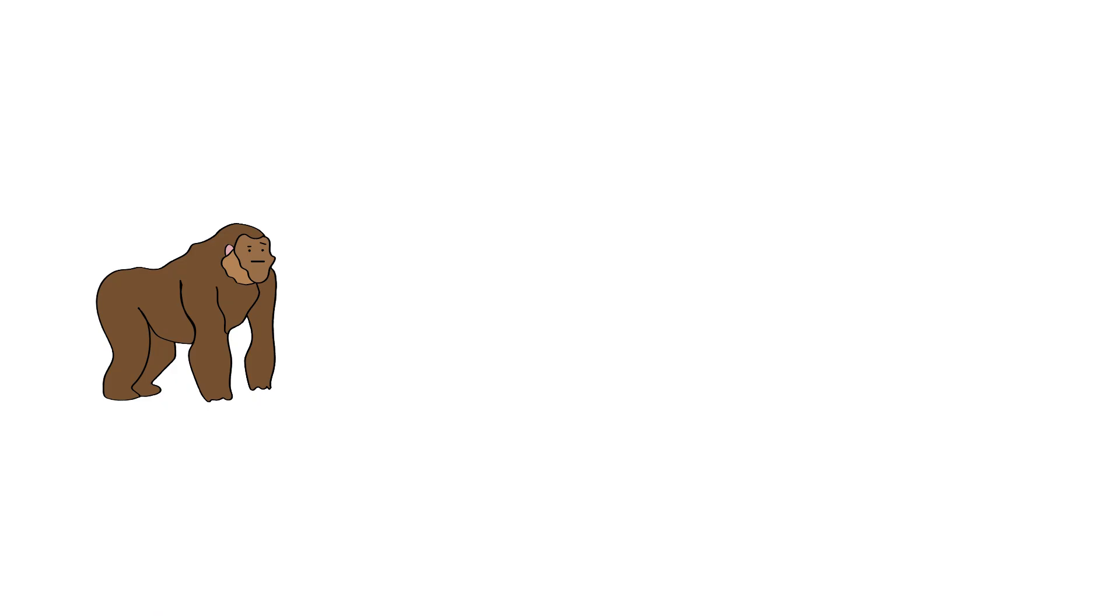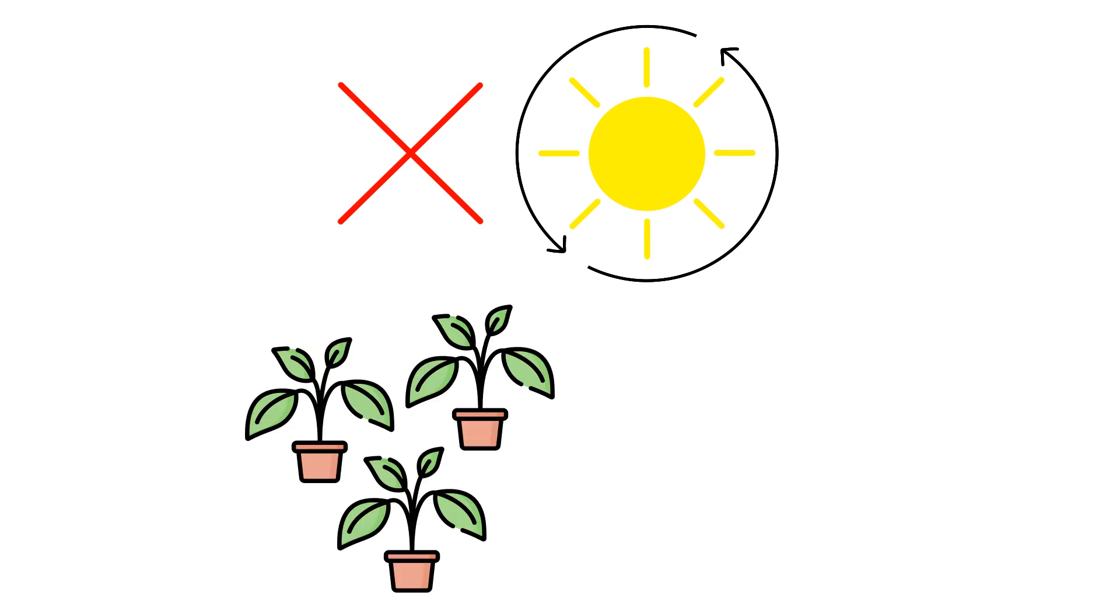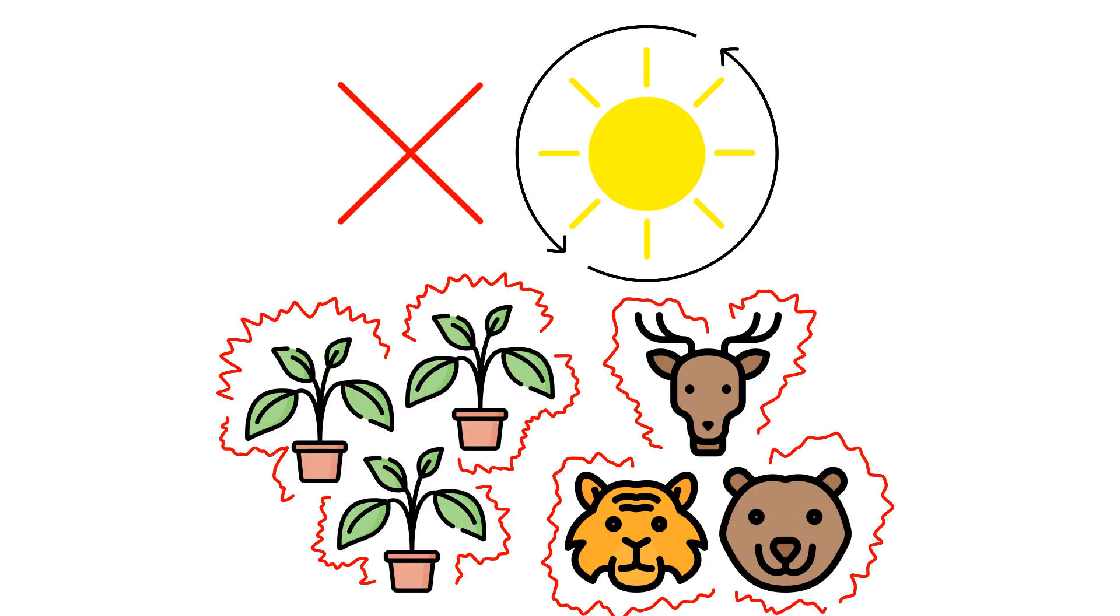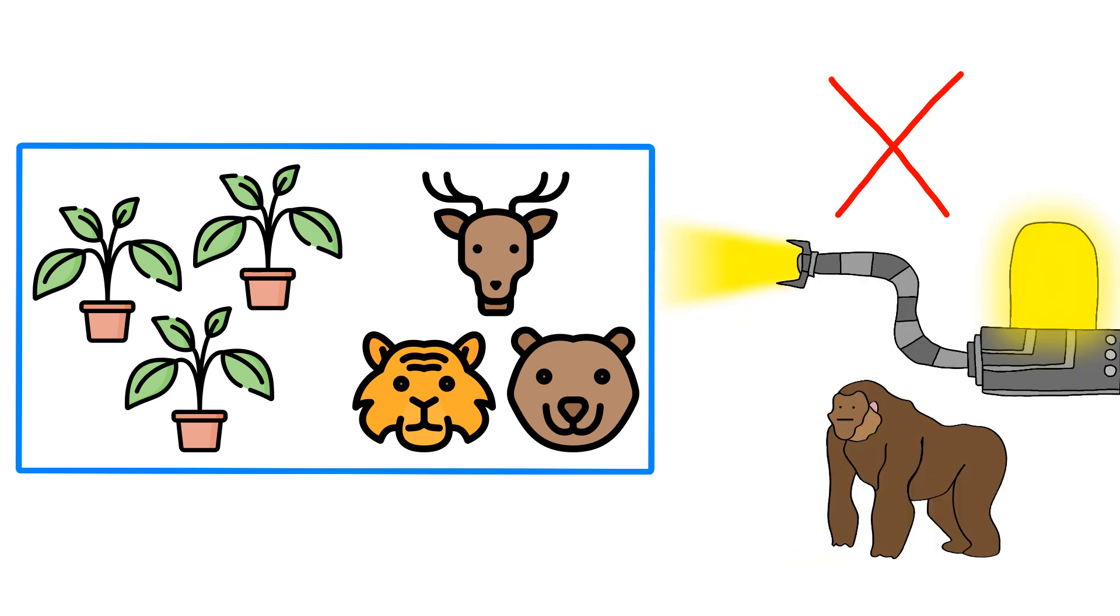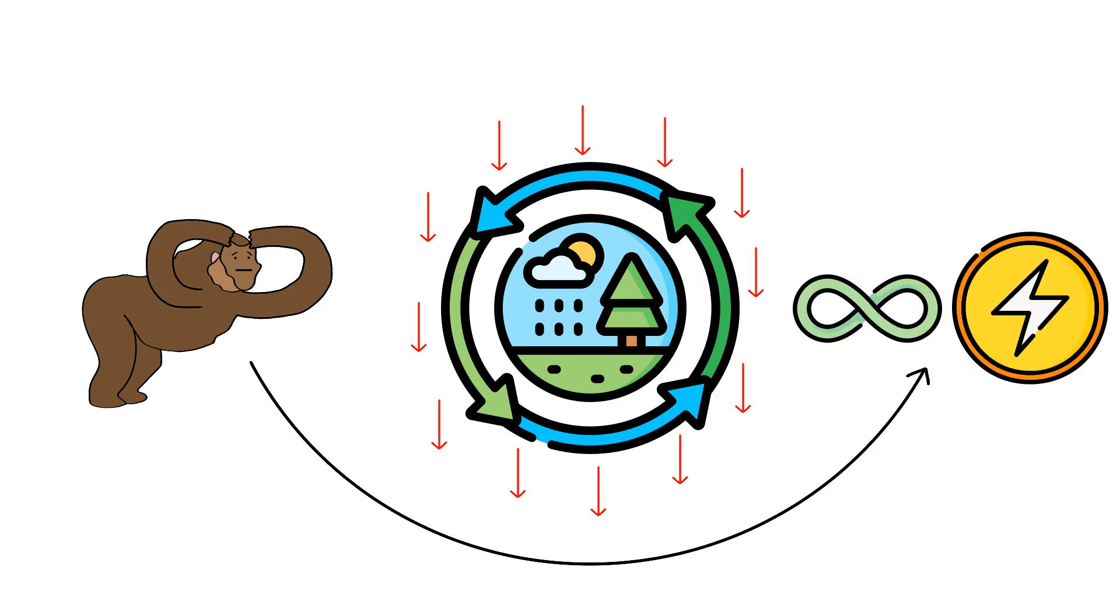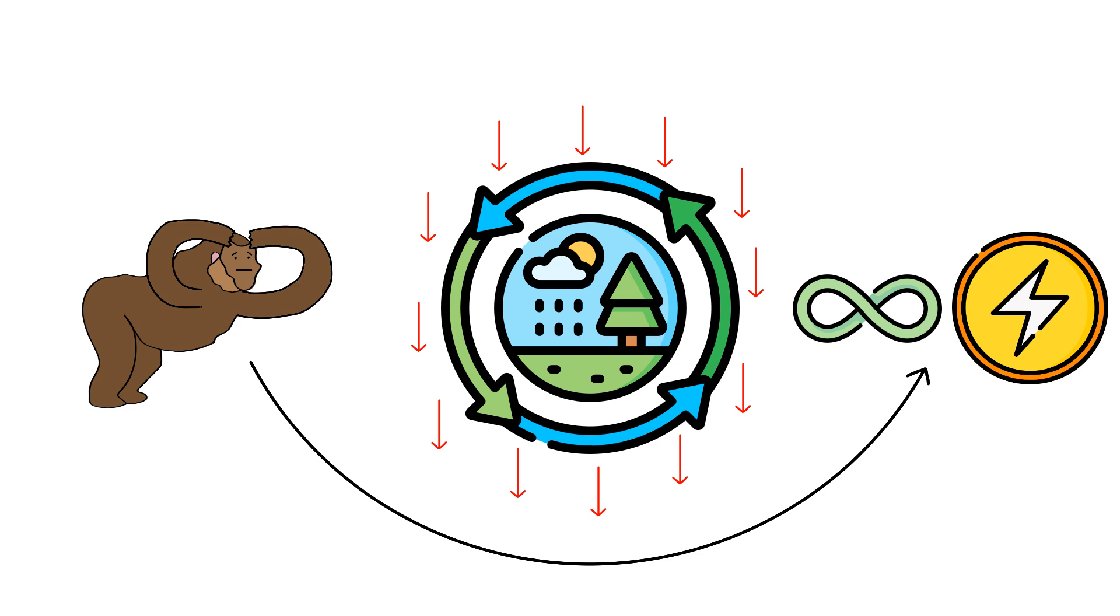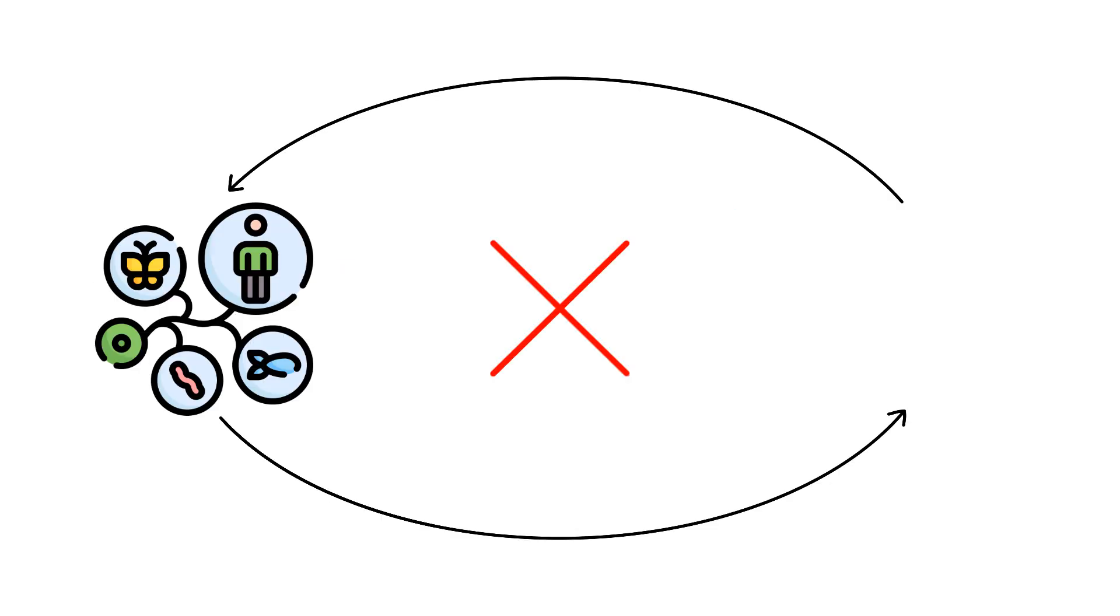But then Monkey notices something disturbing. Without natural sunlight cycles, plants and animals start behaving strangely, because they evolved over millions of years with real solar patterns, not Monkey's artificial perfect lighting. And Monkey's watching ecosystems slowly break down, despite having unlimited energy to fix them. And Monkey realizes, you can't just replace millions of years of evolution with engineering.